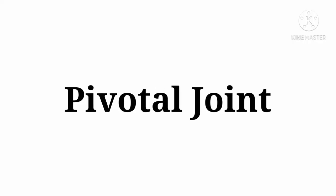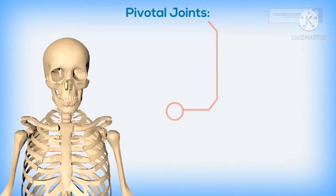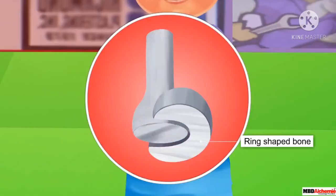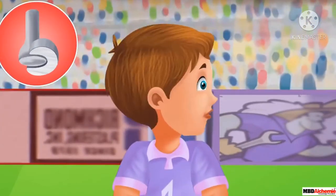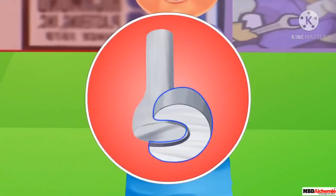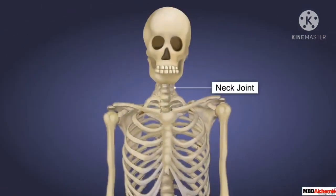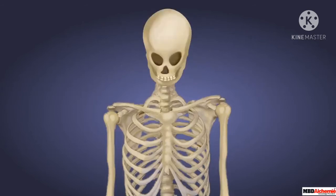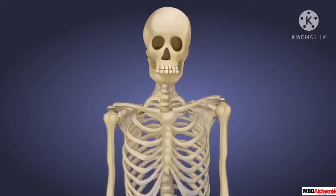Now let us move on to the next joint, that is the pivotal joint. The joint where our neck joins the head is a pivotal joint. In this type of joint, one bone acts as a cylinder and fits into the end of another bone which is like a ring. The cylindrical bone rotates inside the ring and allows movement in different directions. The example of pivotal joint is the neck joint. The pivotal joint allows movement of the neck sidewards — towards right and left — upward and downward, and it also allows rotation of the neck.